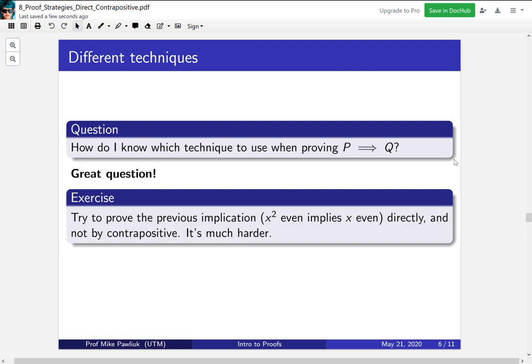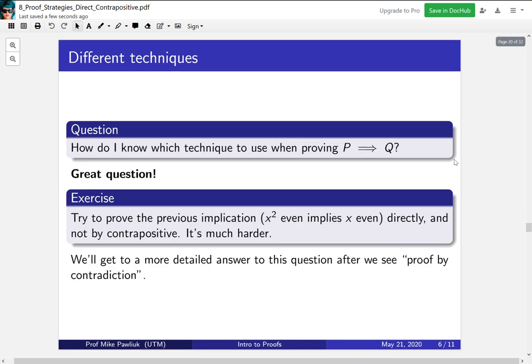As an exercise, try to prove the previous implication, which is x squared even implies x even. Try to prove that directly, and not by contrapositive. You'll see that it's much harder. And if you can express in words why it's much harder, then I think you'll see why you might want to use contrapositive versus direct, or you might prefer direct over contrapositive. We'll get to a more detailed answer to this question after we see proof by contradiction.